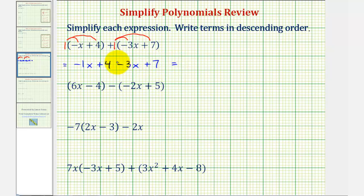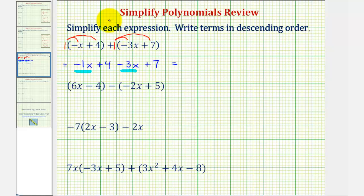And now we'll combine like terms. Because we want the terms in descending order, we want the x term first, followed by the constant. We have two x terms: negative one x minus three x. Since negative one minus three is negative four, this would be negative four x. And then four plus seven is eleven, giving us plus eleven.